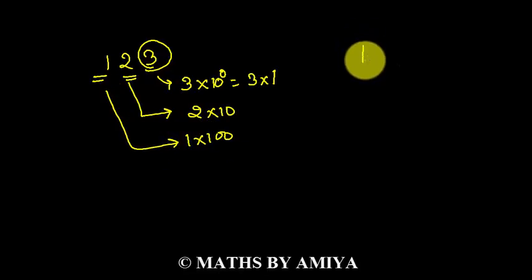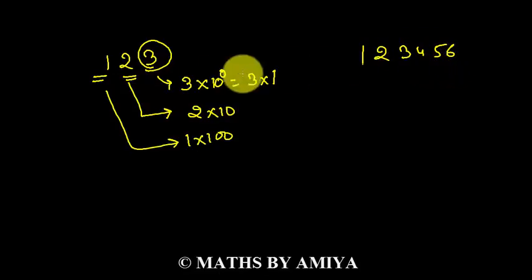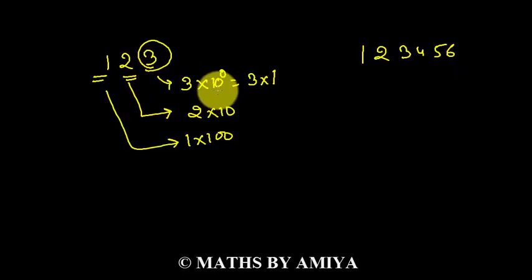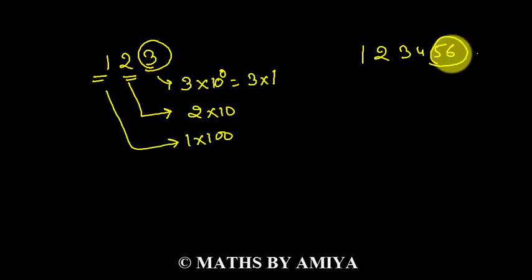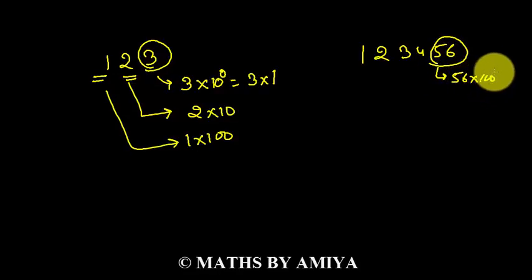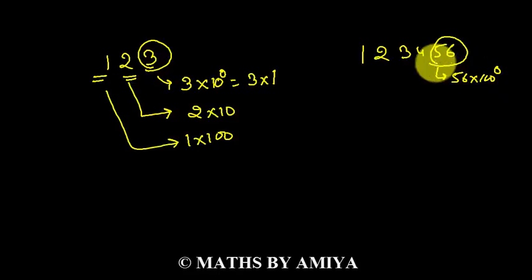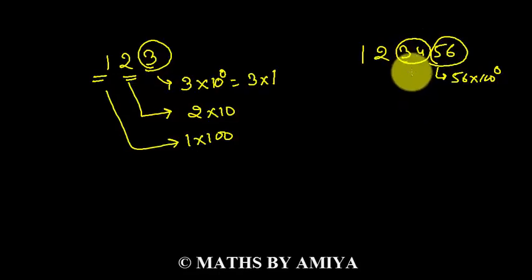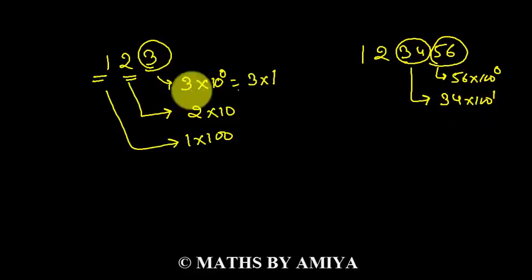Now work on another number: 1, 2, 3, 4, 5, 6. Here we are making a bundle of 1, so we are working on base 10. If we make a bundle of 2, taking 2 digits from the right-hand side, the last bundle is 56 into 100 raised to power 0. Why 100? Because we are working on a bundle of 2. The next bundle is 34, which is 34 into 100 raised to power 1.